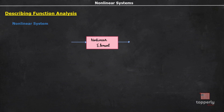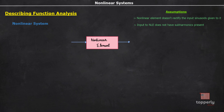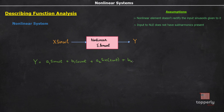Now let's see what happens in a nonlinear system. We start with two assumptions: first, the nonlinear element does not rectify the input sinusoid given to it; second, we do not introduce sub-harmonics in our system. Suppose we give an input signal x sin(ωt) to the nonlinear element and get an output y. We can represent the output using a Fourier series expansion: y = a₁ sin(ωt) + b₁ cos(ωt) + a₂ sin(2ωt) + b₂ cos(2ωt) + etc.